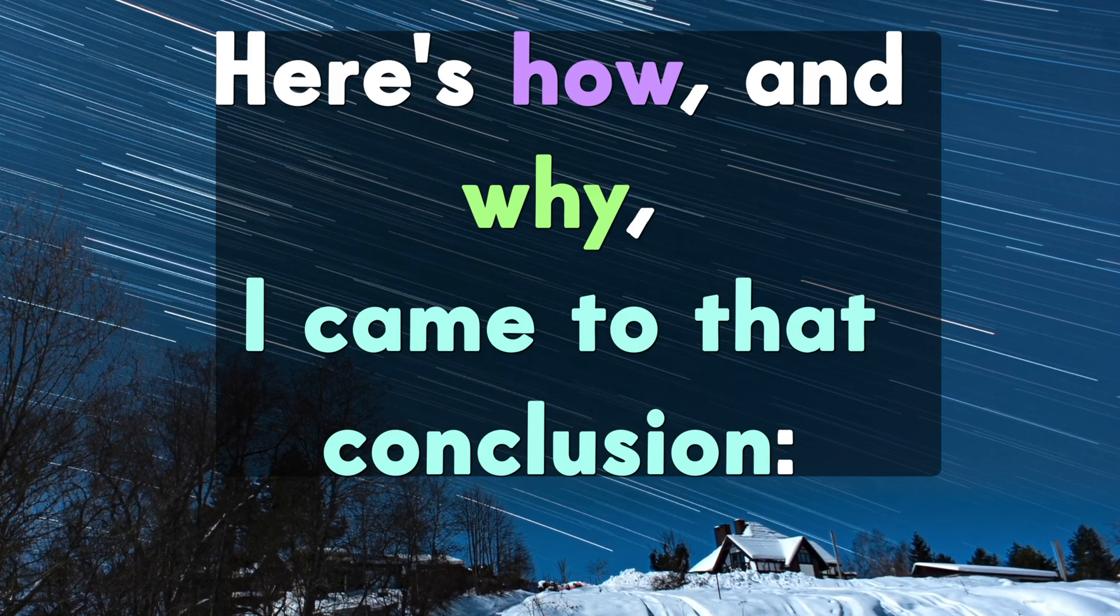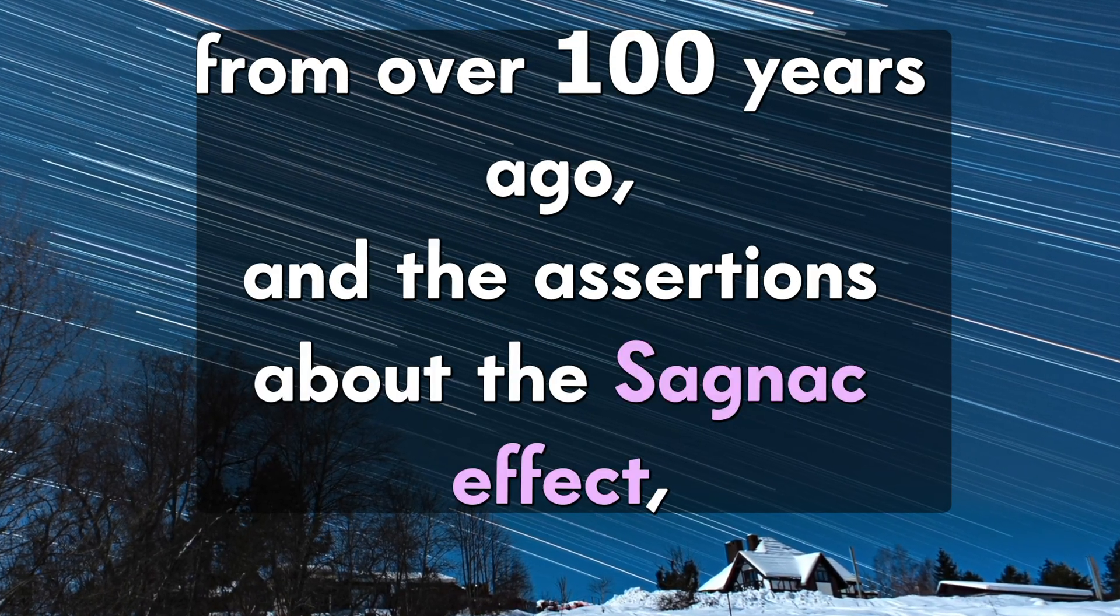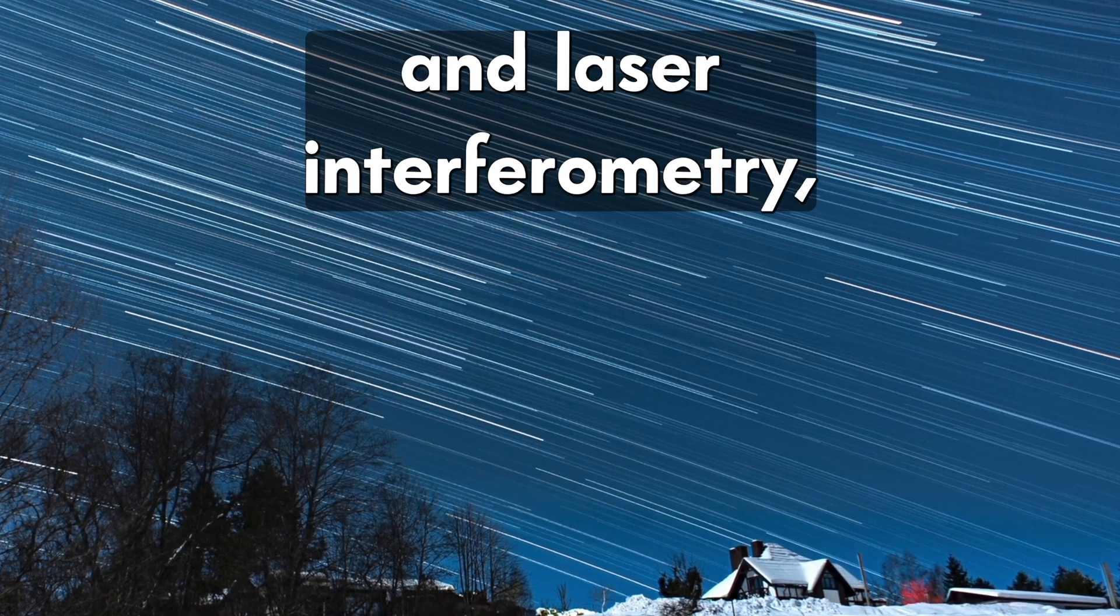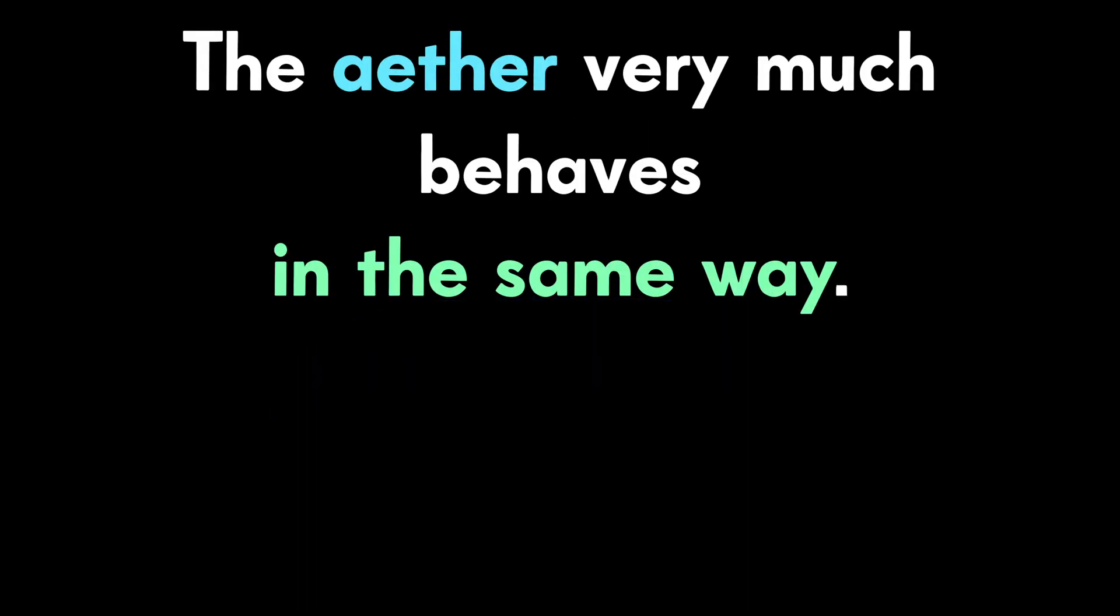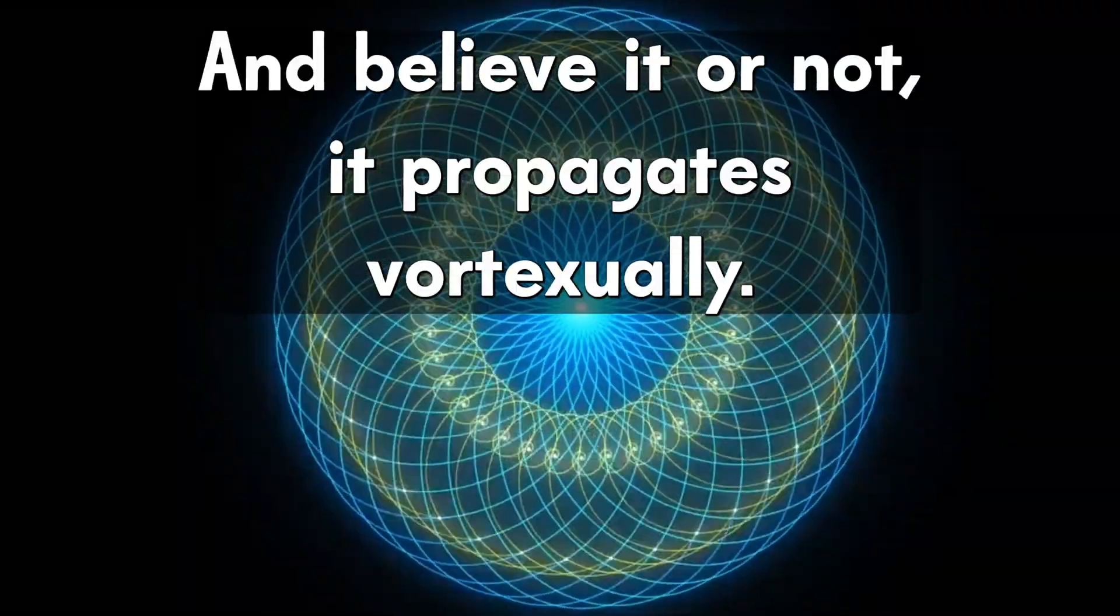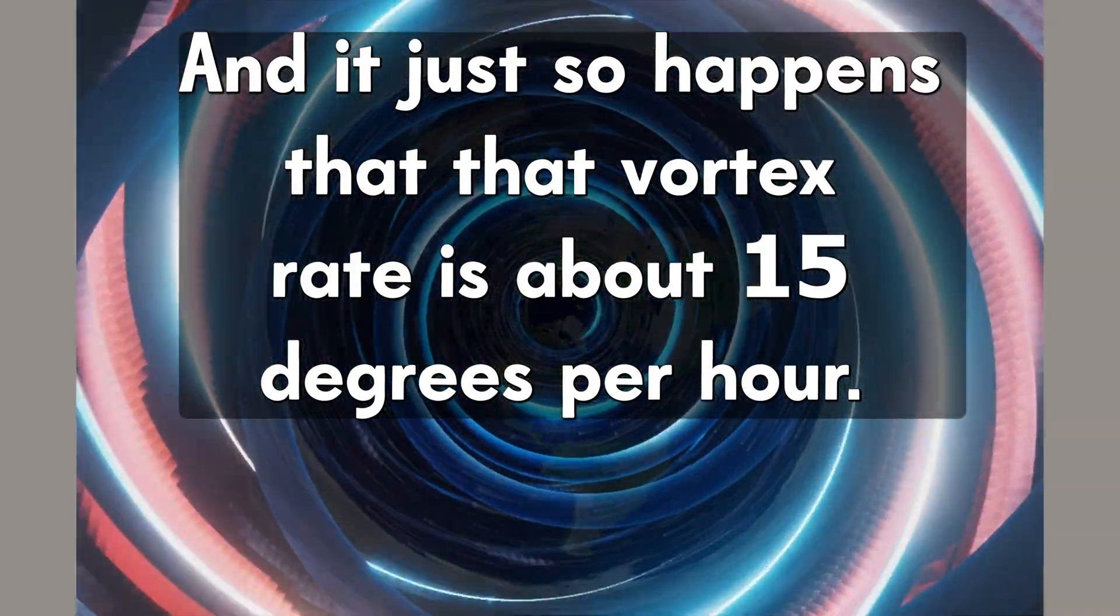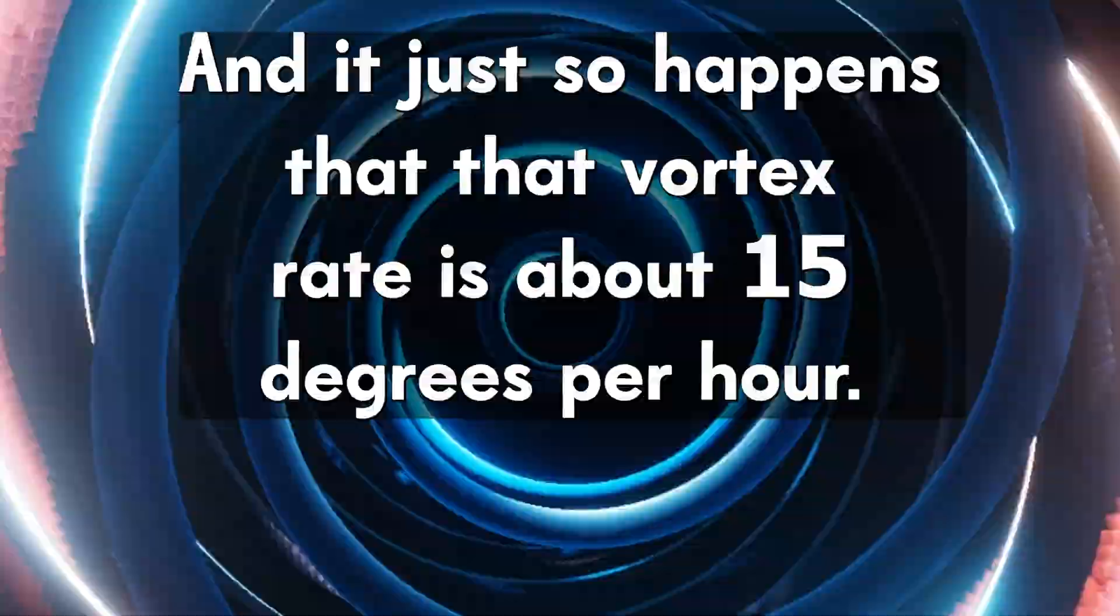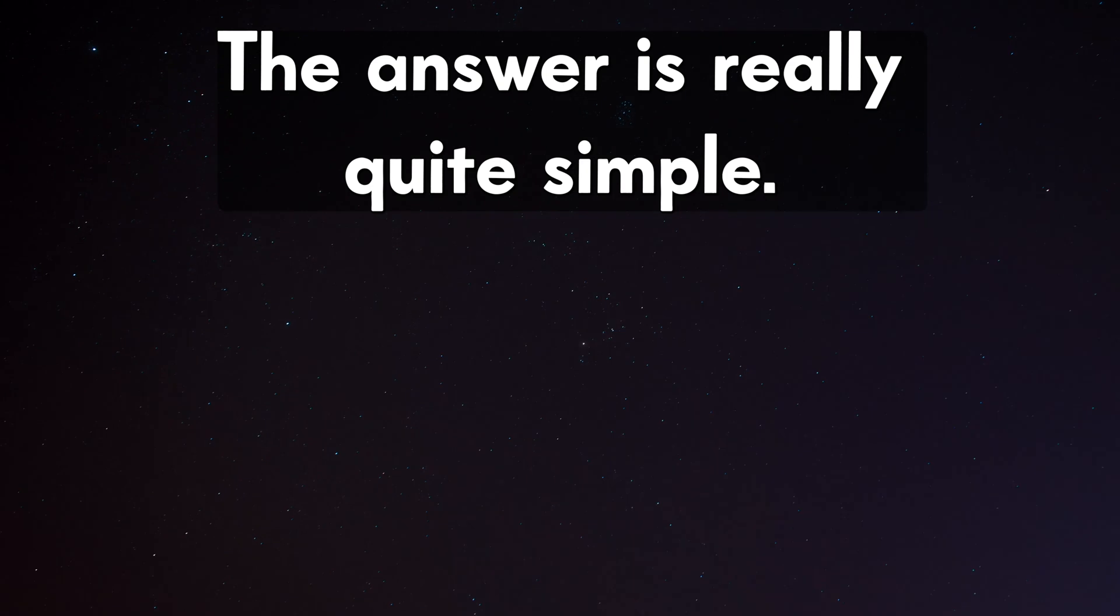Here's how and why I came to that conclusion. We went back and we looked at these experiments from over 100 years ago and the assertions about the Sagnac effect and laser interferometry. It turns out that what they say about the luminiferous ether is that it behaves very much like a magnetic toroidal field. The ether very much behaves in the same way. It actually is moving. It's not a stationary thing. And believe it or not, it propagates vortexually. And it just so happens that that vortex rate is about 15 degrees per hour.